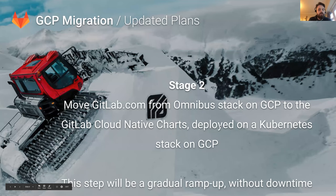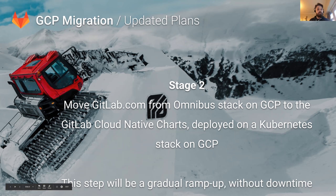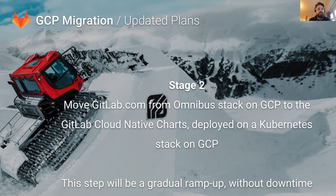In the second stage of the project, we'll stand up a Kubernetes cluster alongside the Omnibus version of GitLab.com that we'll already have running in GCP. We'll use cloud-native Helm charts that the build team are currently working on to provision GitLab.com workers in Kubernetes. These workers will share the same Postgres and Redis instances as the Omnibus version. Then we'll gradually shift traffic from the old cluster to the new one — this isn't going to happen overnight.